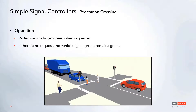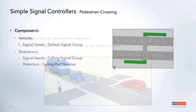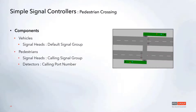For pedestrians, they will only get green once they request it — once that detector has been triggered for the calling group. Otherwise, if there is no request, the default signal group remains green. For setup, vehicles need the default signal group, while pedestrians have a calling signal group assigned to their signal head and their detectors set up with the calling port number.